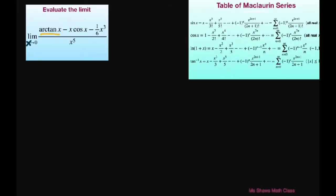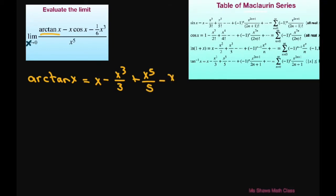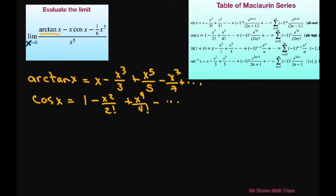So for arctan(x), we're just going to write this as arctan(x). It's pretty much — I'll write it so you can see it better — this is x minus x cubed divided by 3 plus x to the power of 5 divided by 5 minus x to the power of 7 divided by 7, and so on. And cosine of x equals 1 minus x squared divided by 2 factorial plus x to the 4th power divided by 4 factorial minus and so on.